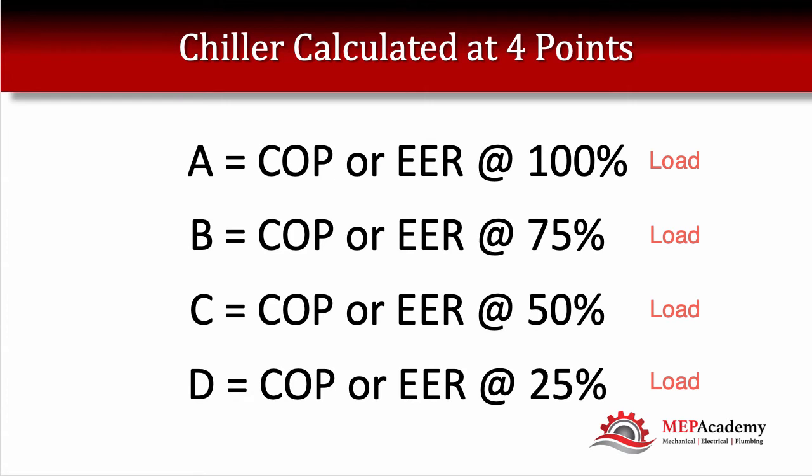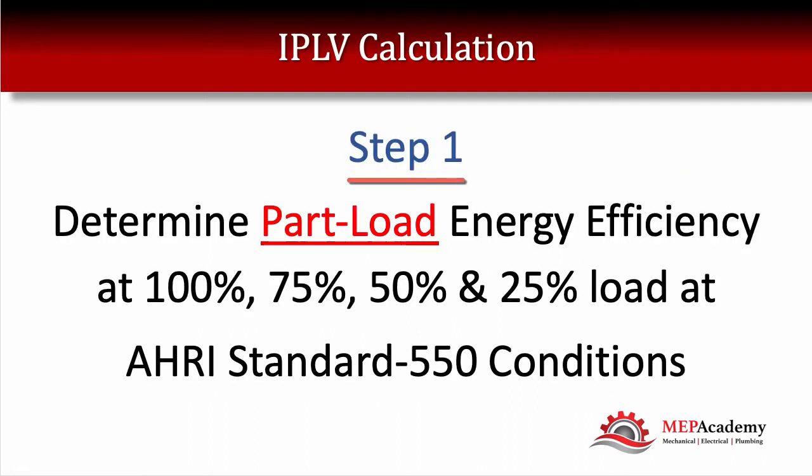These four points represent the load percentages at which the chiller runs. When it's running at 100% load we put that EER into the calculation, and we also include the EER when running at 75%, 50%, and 25% load. Step one is to determine the part load energy efficiency value at these four running loads: 100%, 75%, 50%, and 25%.